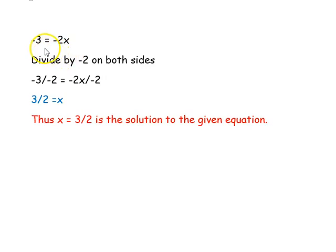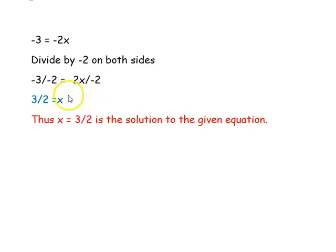Dividing both sides by −2: (−3)/(−2) = (−2x)/(−2), giving x = 3/2. Thus, x = 3/2 is the solution to the given equation.